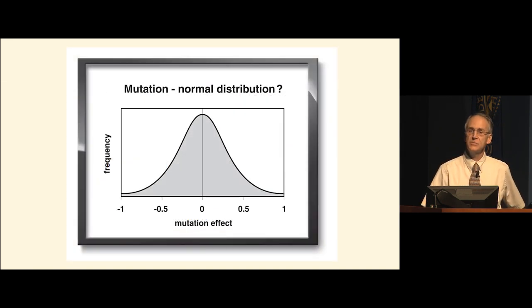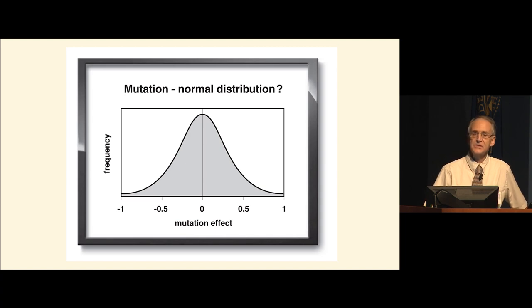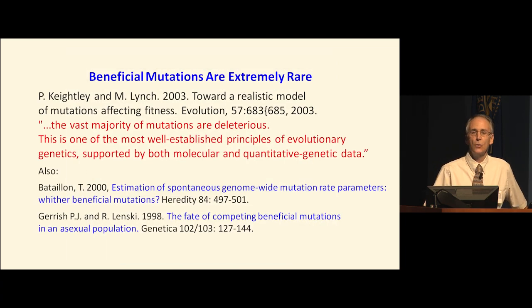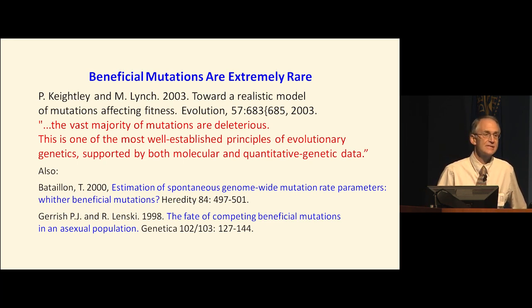Fisher envisioned mutations arising with their mutational effect ranging from very bad to very good, with neutrals being centered. He pictured a balance of good and bad mutations so that he could ignore the impact of mutations because they were having a neutral effect. The problem is we now know beyond any doubt that beneficial mutations are very rare, and that non-neutral mutations are consistently deleterious, as you'd expect from typographical changes in a text.